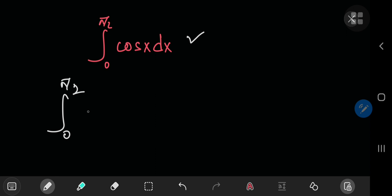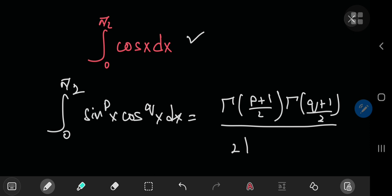So the integral from 0 to pi by 2 of sine to the p of x times the cosine to the q of x equals the gamma function of p plus 1 by 2 times the gamma function of q plus 1 by 2 divided by twice the gamma function of p plus q by 2 plus 1.